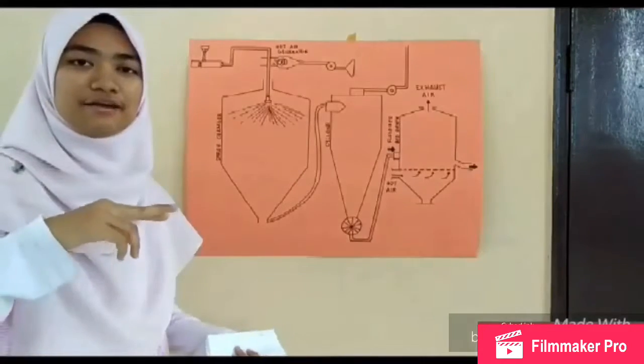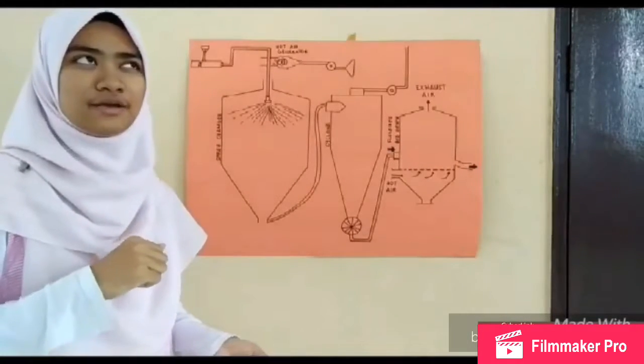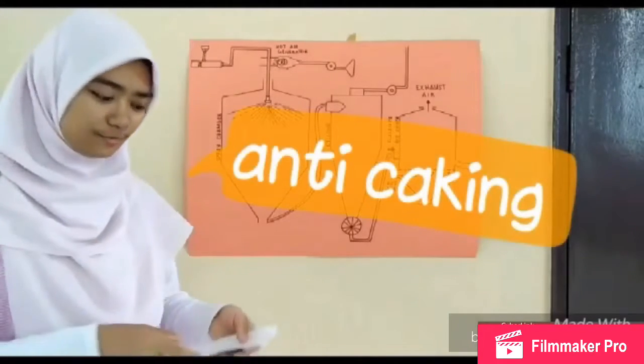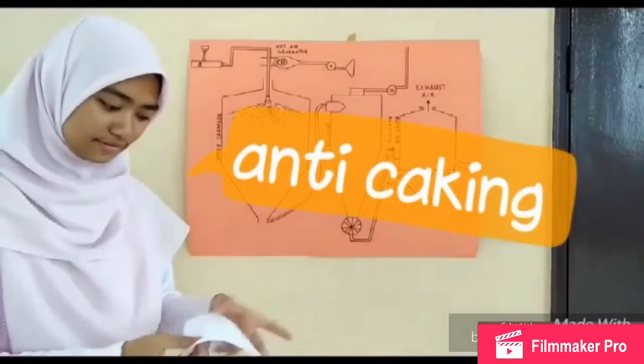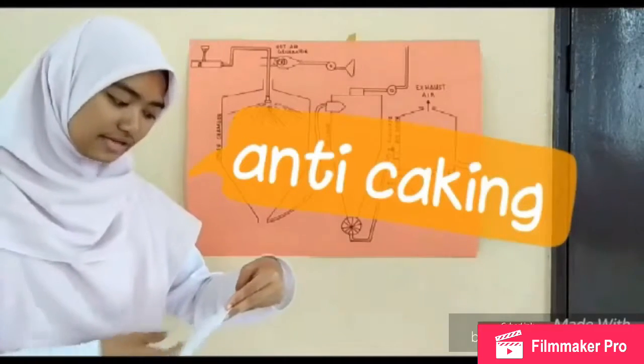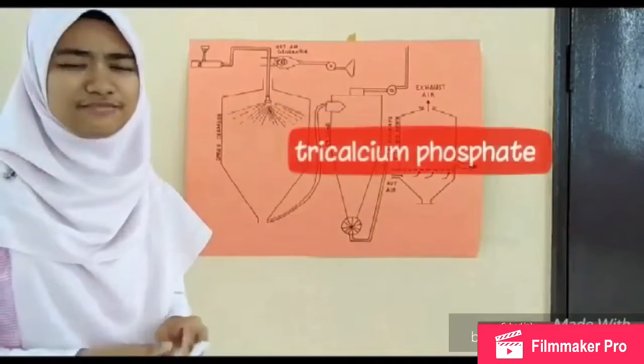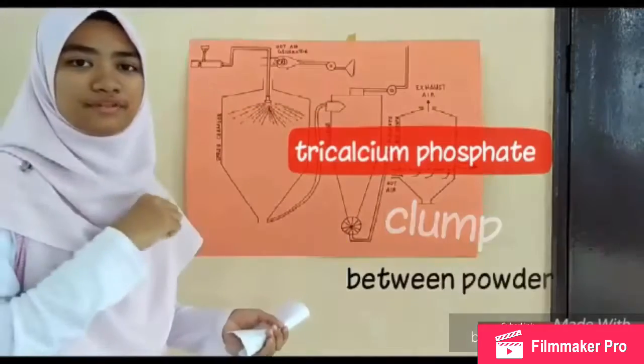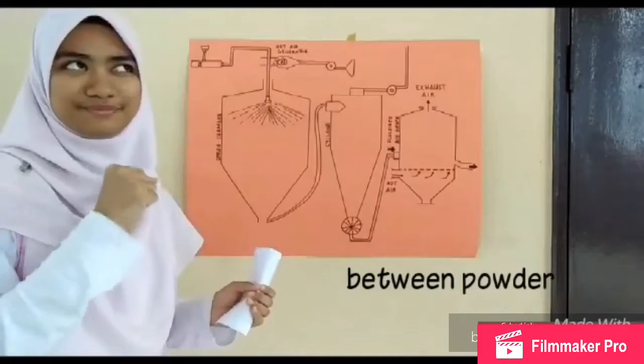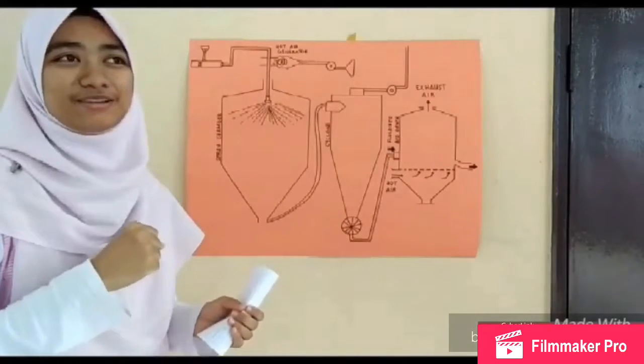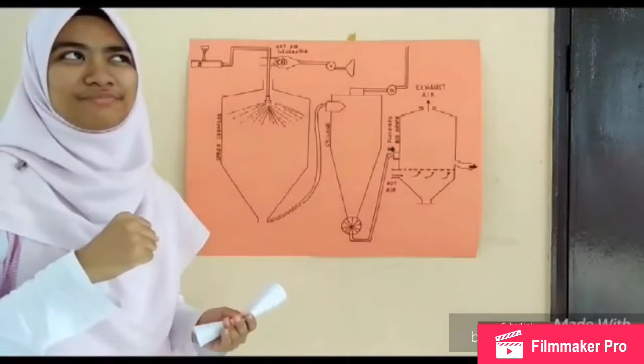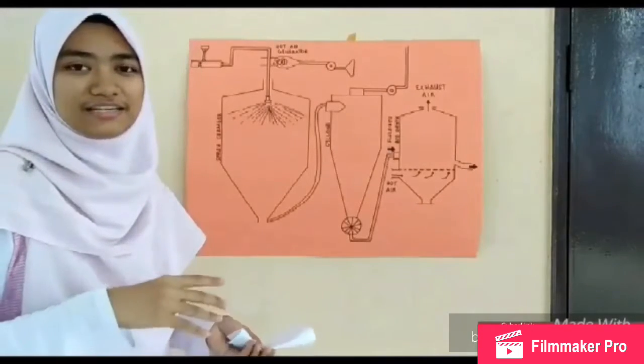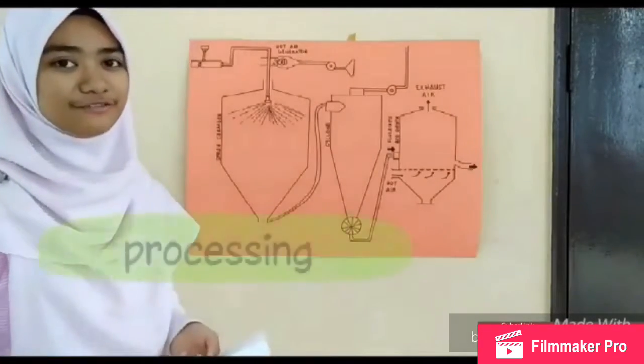The next food additive is anti-caking agent, tri-calcium phosphate. Tri-calcium phosphate will avoid clumping between the powder particles and is also white in color so it won't change the white color of the sour soup powder.